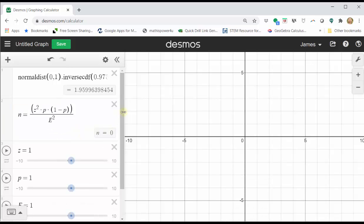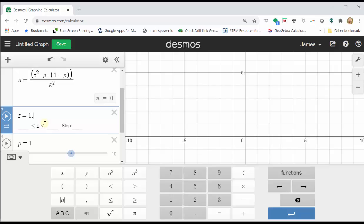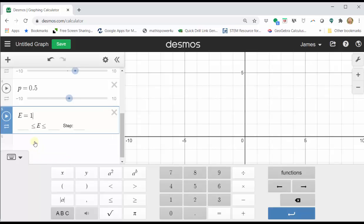And now we enter the values of Z, the Z-score, P, the sample proportion, and E, the error. We enter Z equals 1.96, enter P equals 0.5, enter E, which is 0.03.